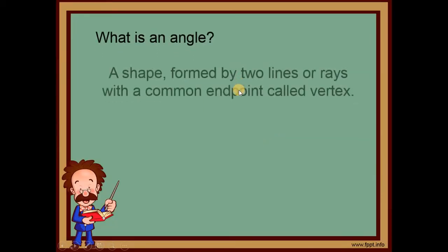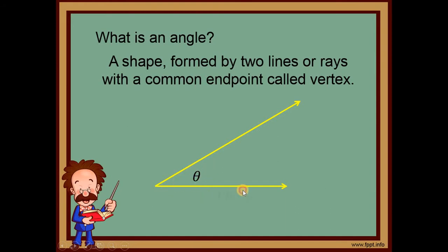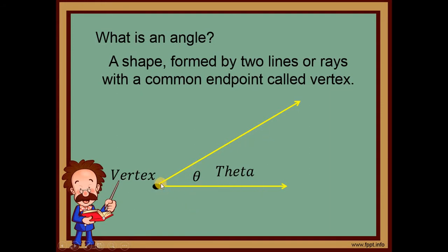First, what is an angle? An angle is a shape formed by two lines or rays with a common endpoint, and that common endpoint is called the vertex. This is an example of an angle, and the angle is usually denoted by this symbol, which we read as theta. This point is what we call the vertex.